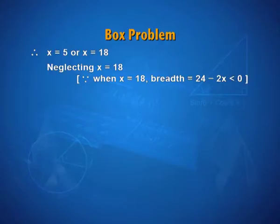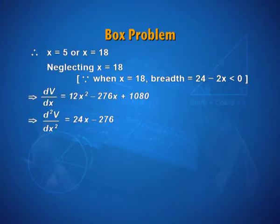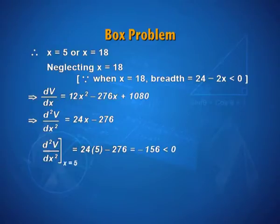Is x equal to 5 a point of maxima or minima can be decided by second derivative. Second derivative is 24x minus 276. At x is equal to 5, it is a negative quantity less than 0. Second derivative test implies that volume, that is v function is maximum when x is 5.